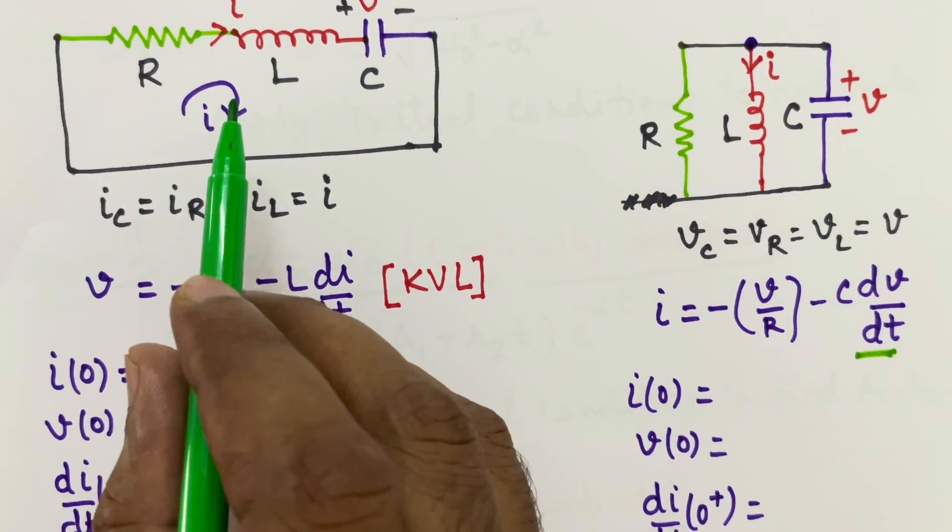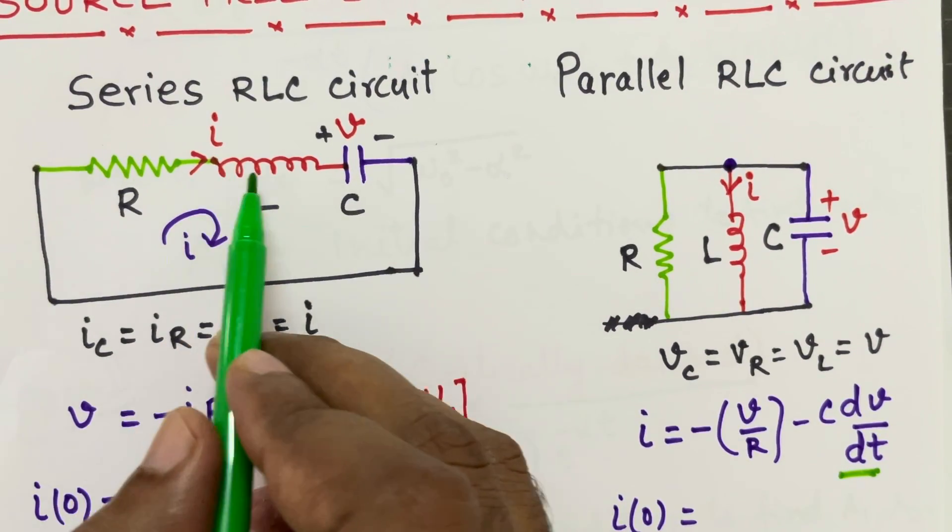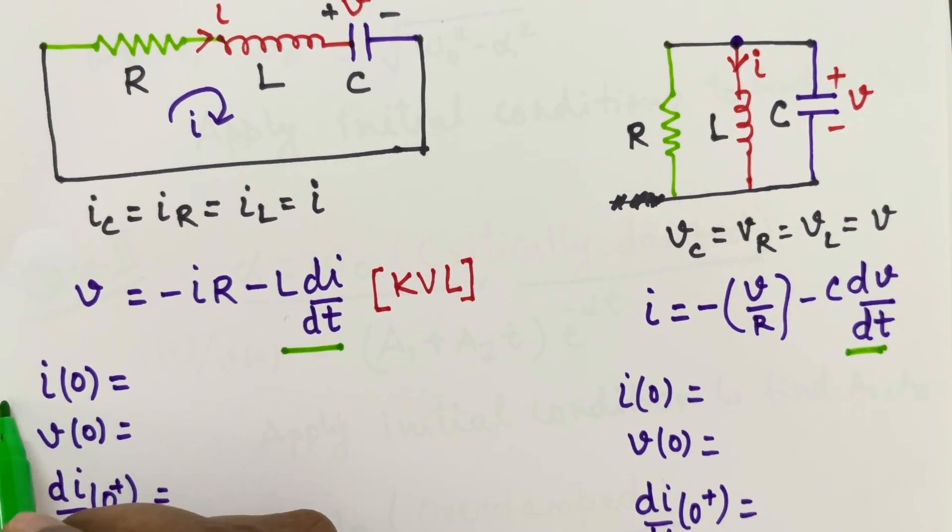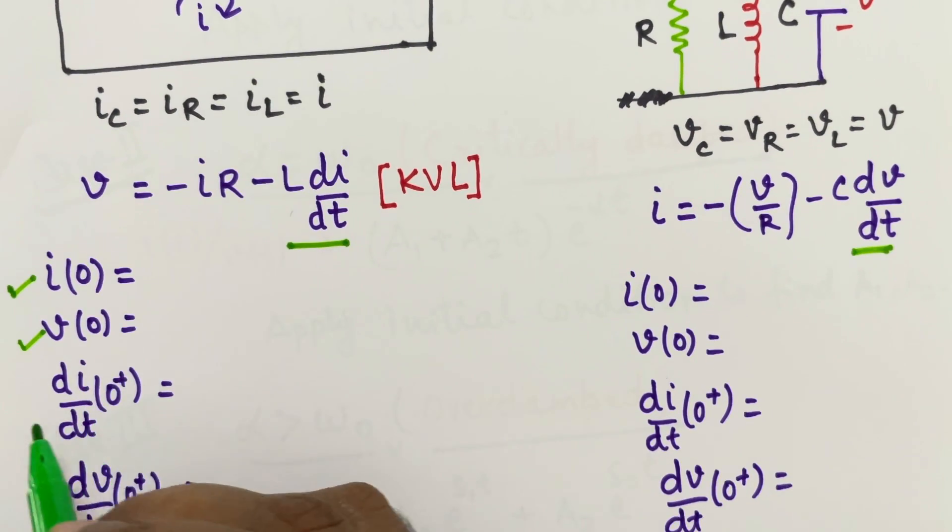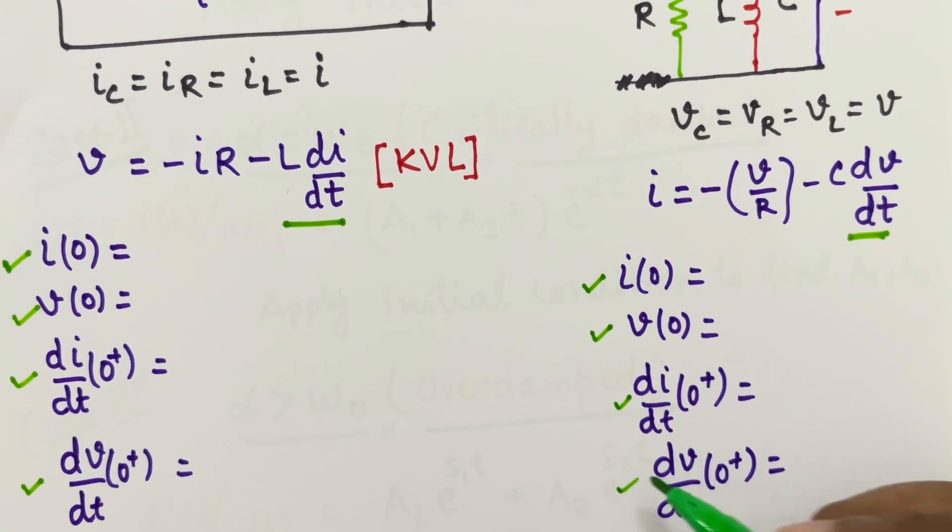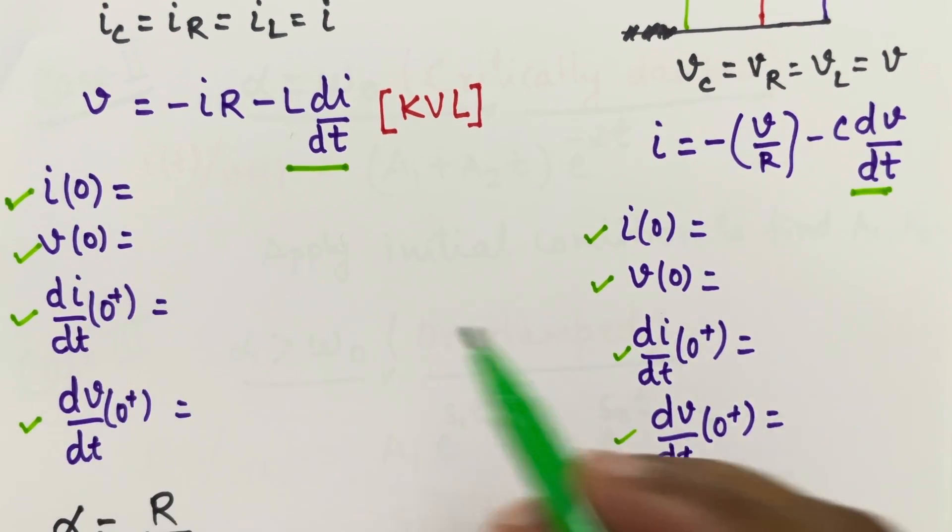By taking the initial condition means at T equal to zero, if there was any current in the inductor or there was voltage across the capacitor. For that purpose, we find out the initial condition which is I(0), V(0), dI by dT at 0, dV by dT at 0. Same thing we will be doing for parallel also. So these four things are very important for calculating the constant which comes in the equation. We will be finding these four items for both the types of circuit.